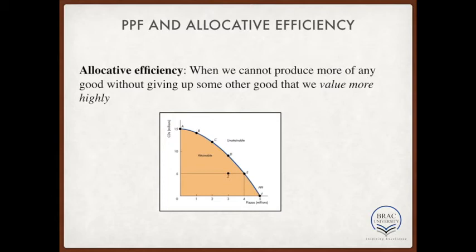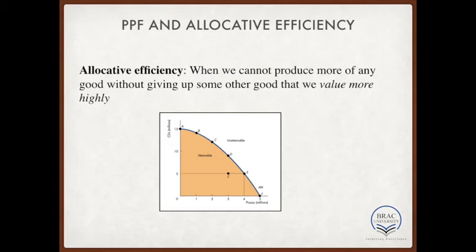We start by talking about allocative efficiency in PPF. Allocative efficiency means that the particular mix of goods a country produces represents the combination that the country most desires. For example, a society with a younger population has a preference for production of education over the production of healthcare. And if the society is producing the right quantity of education that the society demands, then we can say the society is achieving allocative efficiency.